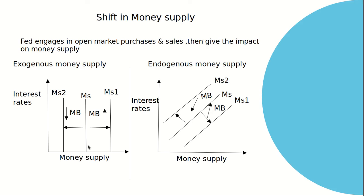Higher interest rate leads to a lower currency-to-deposit ratio and excess reserve ratio, and it will lead to a higher money multiplier and a greater quantity of money supply. Shift in money supply: the federal bank engages in open market purchases and sales, which impact the money supply. For the exogenous money supply curve — when there is an increase in money supply, the monetary base will increase and the curve shifts to the right. When there is a decrease, the monetary base decreases, the curve shifts to the left. In case of purchases, money supply increases — a rightward shift. When there is a sale of securities, there will be a leftward shift.